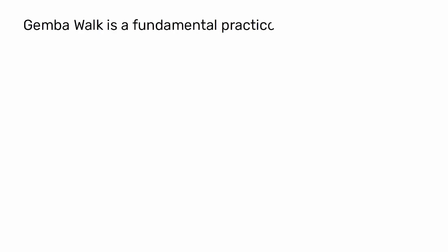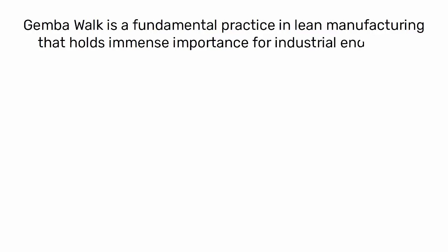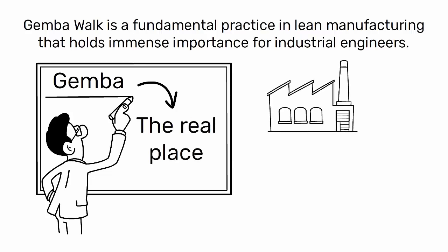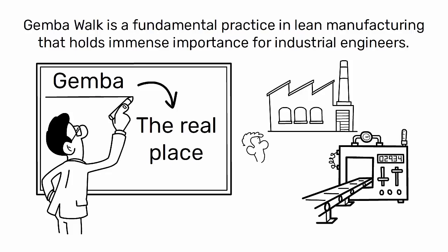Gemba walk is a fundamental practice in lean manufacturing that holds immense importance for industrial engineers. The term Gemba is a Japanese word that translates to the real place, referring to the place where value is created, such as the production floor in a manufacturing facility.